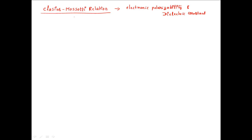For that purpose, first we will write the relation for polarizability. We know that P is equal to n times mu. So polarization P is equal to n times alpha_E times E. Here alpha_E value we can find out in terms of the dielectric constant, and here E can be written as the total internal field produced in the dielectric material. Instead of E, we can write E_internal. Let this be equation 1.